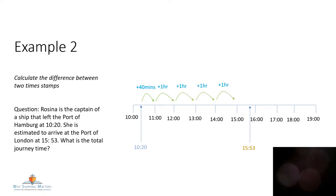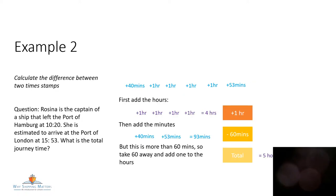Then another hour, another hour, another hour, and then 53 minutes. So let's add all of that up together. First the hours — there were four whole hours. And then the minutes: 40 minutes at the beginning, 53 minutes at the end. That came to 93 minutes. Well, 60 minutes is an extra hour, so we'll take 60 away, add one to the hours, and then we're left with 5 hours and 33 minutes. Is that the answer you got?